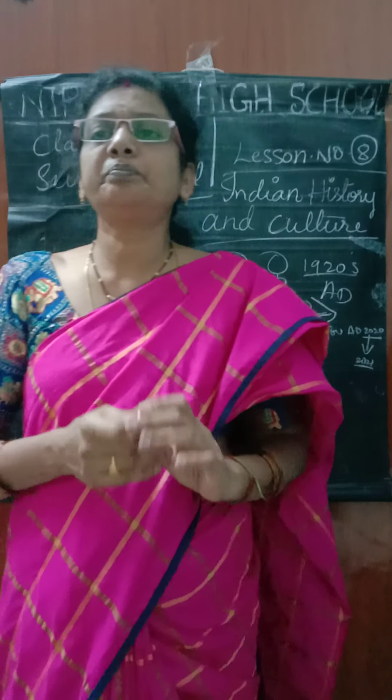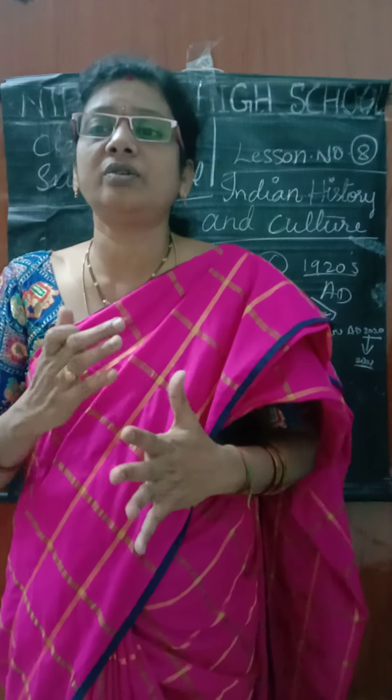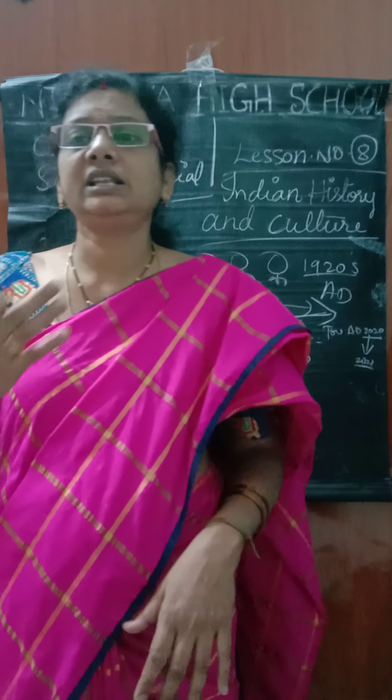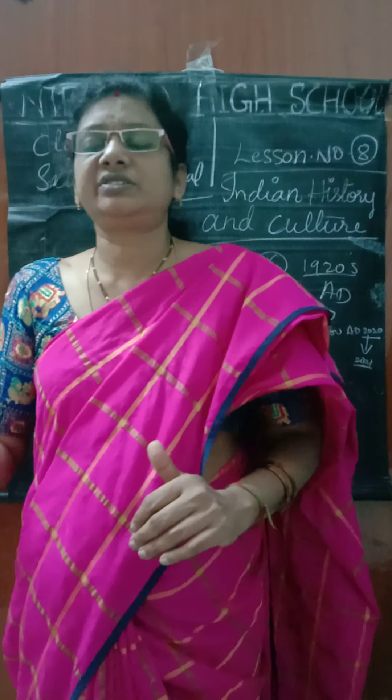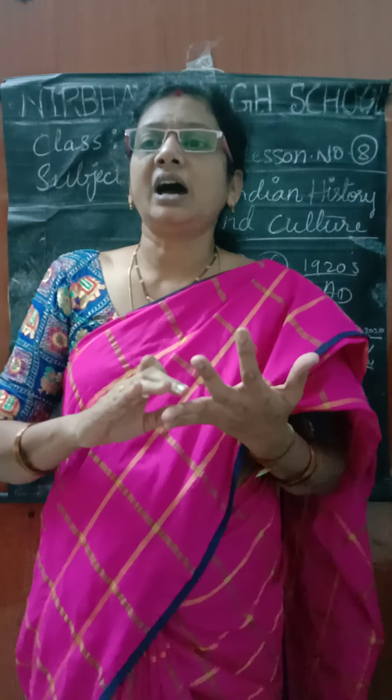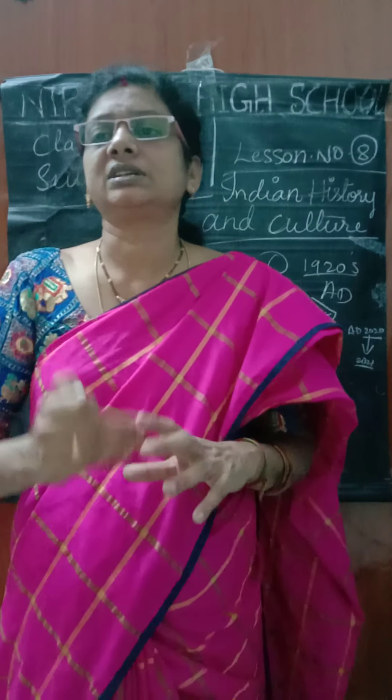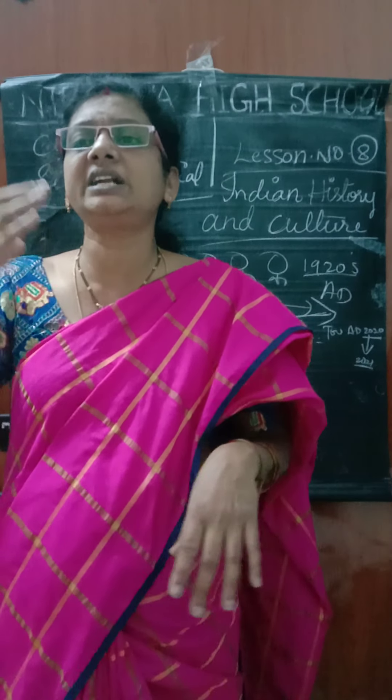The Mauryan dynasty was the largest kingdom of its time in India and the first united empire. King Ashoka was a great warrior and emperor from this dynasty. He captured many kingdoms until the Battle of Kalinga, after which he chose to spread the message of peace. This dynasty was in the BC period — before Jesus Christ.